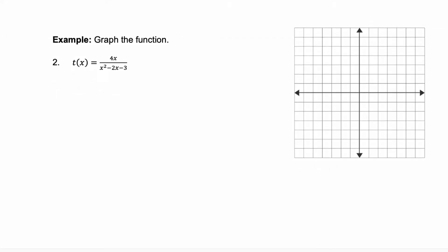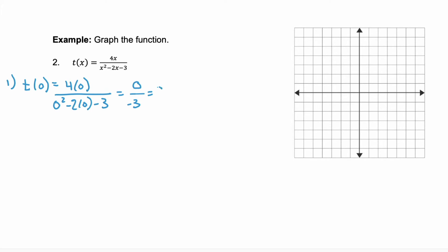Step one is to find the y-intercept. That would be t of 0. We substitute 0 for x: 4 times 0 over 0 squared minus 2 times 0 minus 3. This simplifies to 0 divided by negative 3, which equals 0. So your y-intercept is (0, 0). I'm going to plot that point.